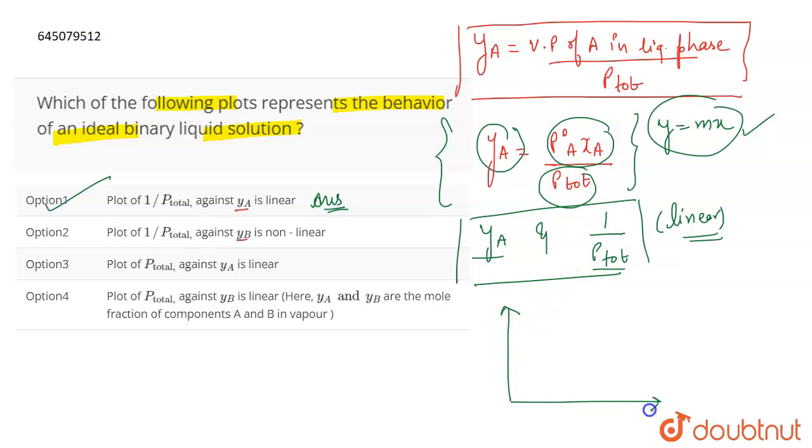So you can also plot it, YA and 1 by P total. If you plot a curve between them, that is going to be a straight line passing from the origin because there is no intercept here.